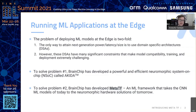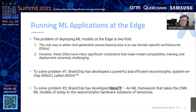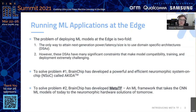The second problem is the software issue. You have these DSAs and you have a TensorFlow model or whatever, and you want to deploy it on there. The problem is these DSAs have many significant constraints that make model compatibility, training, and deployment extremely challenging. So the question is: how do I get from a TensorFlow model that I've trained on a GPU to the Akita SoC?